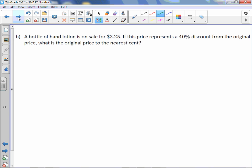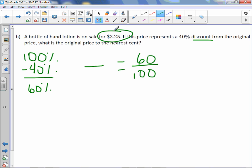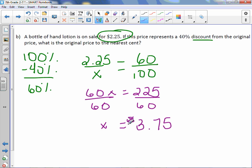Letter B. A bottle of hand lotion is on sale for $2.25. If this price represents a 40% discount from the original price, what is the original price to the nearest cent? In our heads, we can do 100% minus 40% because it's a discount and get 60. So in our proportion, 60 will be the percent. I subtract because it's a discount, and discount means you're taking money off. The sale price is $2.25. I do not know the original price. Cross multiply. 60X equals 225. Divide both sides by 60, and we get a price of $3.75, and that is the original price.